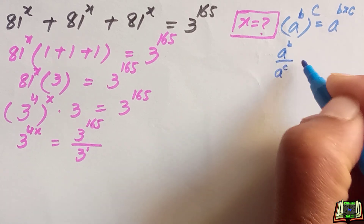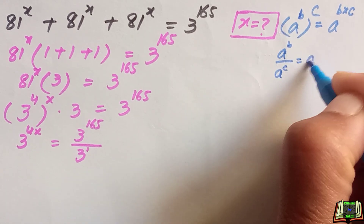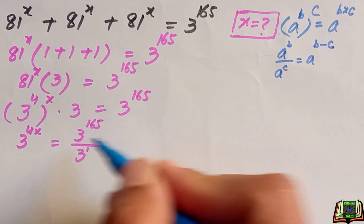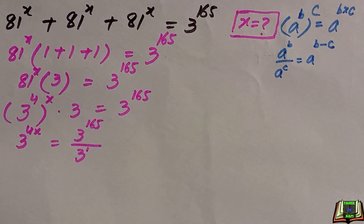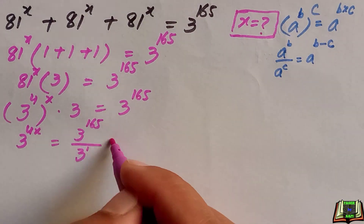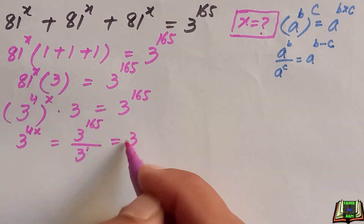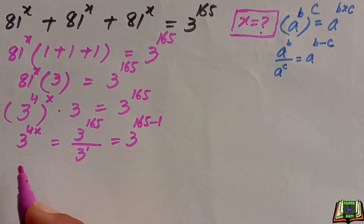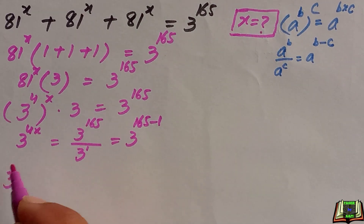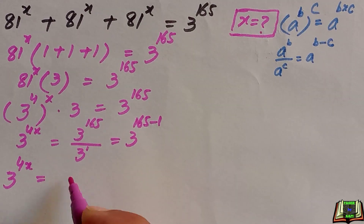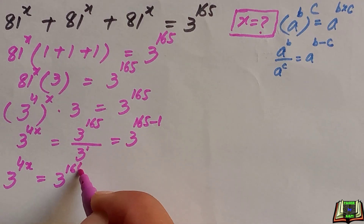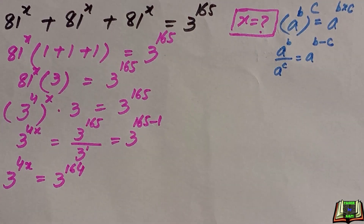Here we use the quotient rule of exponents, which says: if a raised to power b divided by a raised to power c, we can subtract the powers — b minus c. So we subtract the powers: 3 raised to power 165 minus 1, giving us 3 raised to power 4x equals 3 raised to power 164.